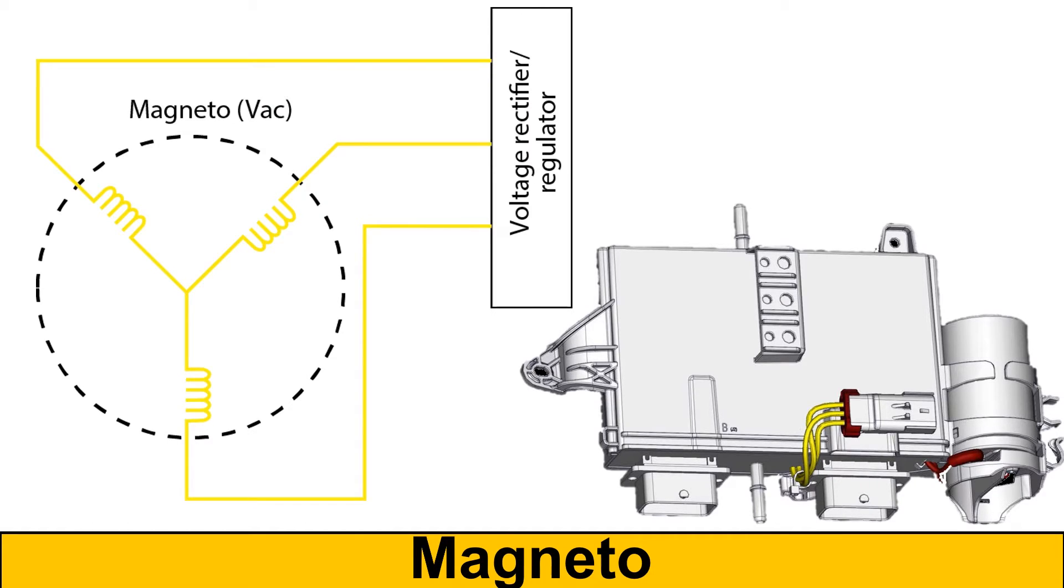A three-phase magneto with a star winding produces 55 volts and over 30 amps of alternating current to power all the components and accessories. The three coils are wired into a three-phase circuit with the output going directly to the ECM. The magneto generates AC voltage that is rectified and regulated by the ECM.